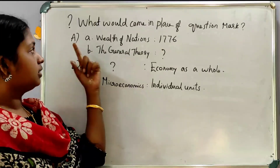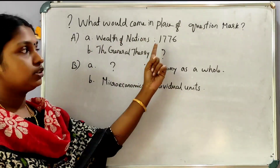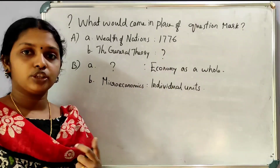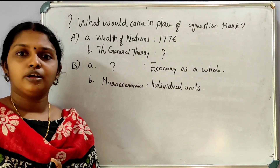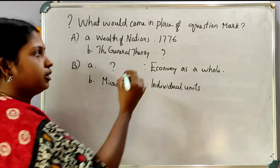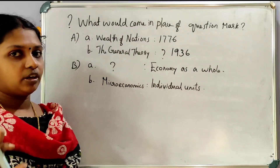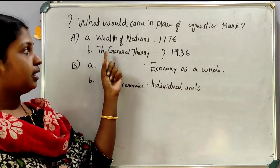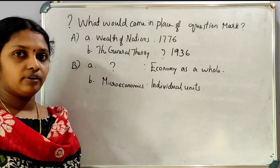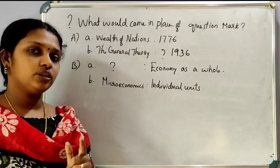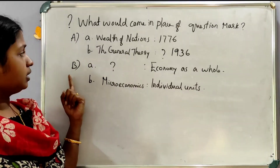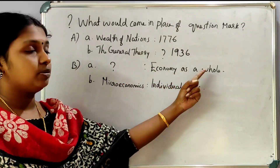First, two questions: 'Wealth of Nations' published in 1776. Then 'The General Theory of Employment, Interest and Money' — this book was published in 1936, authored by J.M. Keynes. The next question: what would come in place of the question mark? The answer is that the whole economy is MacroEconomics.